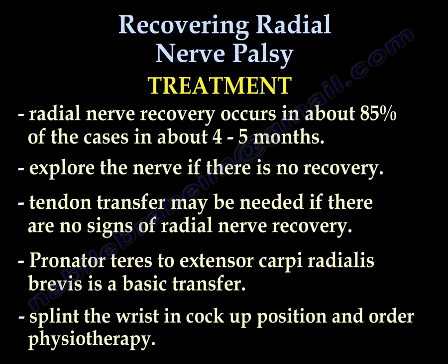Radial nerve recovery occurs in about 85% of cases in approximately 4 to 5 months. Explore the nerve if there is no recovery. Tendon transfers may be needed if there are no signs of radial nerve recovery. Splint the wrist in a cock-up position and order physiotherapy.